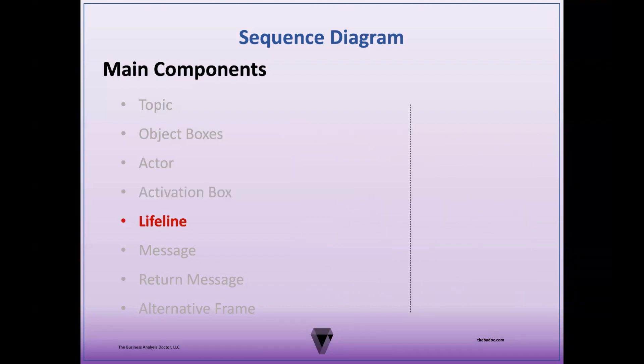The lifeline represents the lifespan — start to end — of an object or actor during the scenario over time. It's drawn as a dashed line that vertically spans from each object or actor to the bottom of the diagram. The lifeline can be terminated with an X, meaning that the object is no longer active in the scenario.